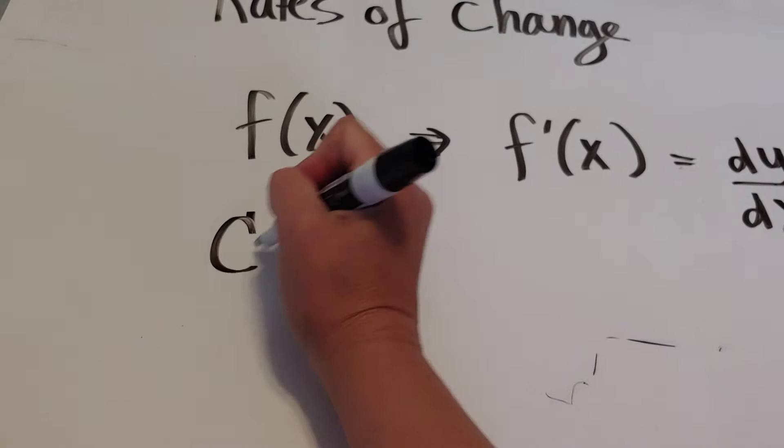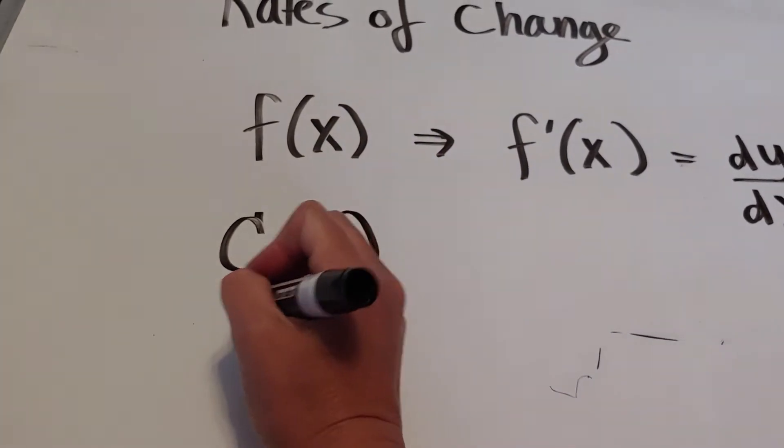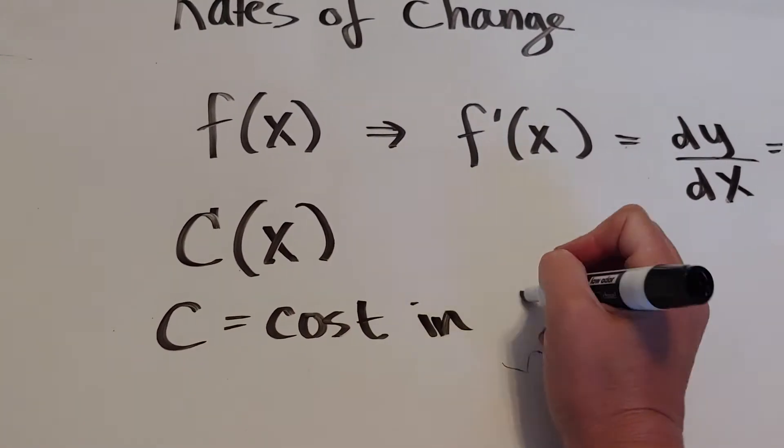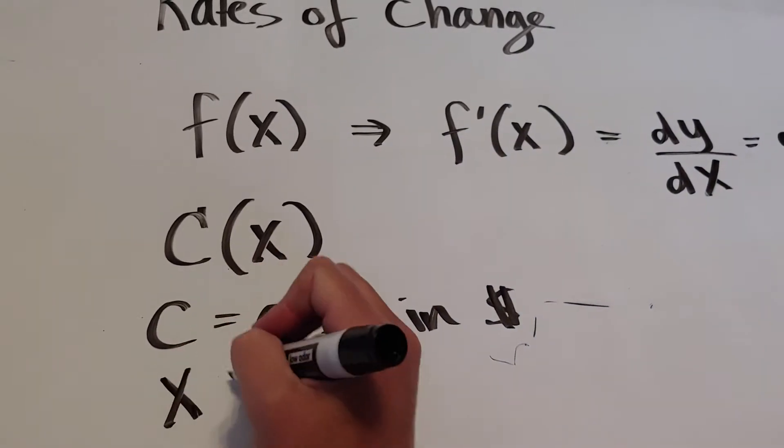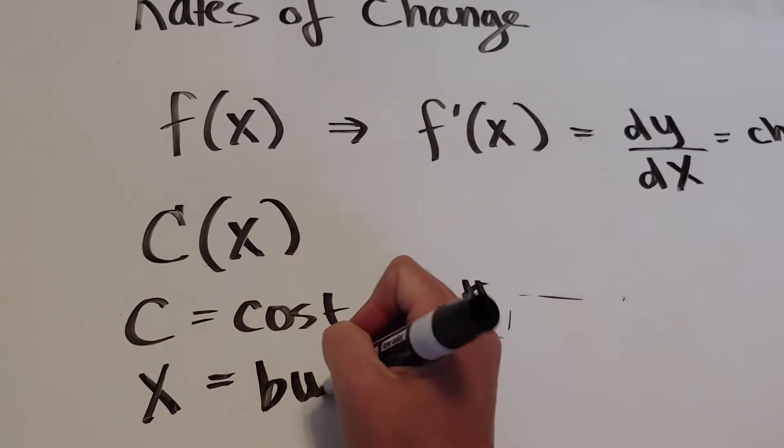It could be c and x, where c is cost in dollars, and x is the number of burgers that I'm selling.